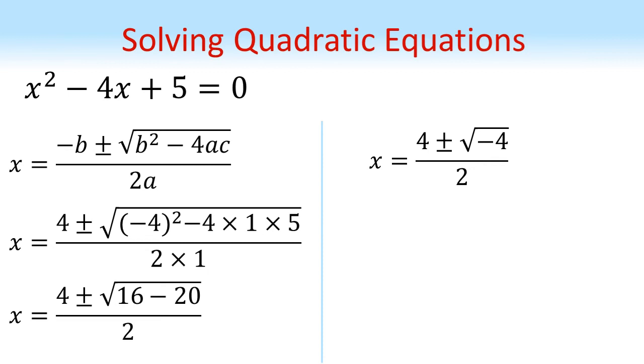So we've got 4 plus or minus the square root of negative 4, all over 2. Now if square roots are negative, we end up with an imaginary number. So we get 4 plus or minus 2i, all over 2.